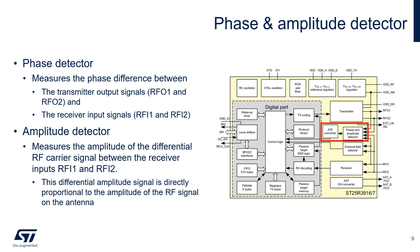The amplitude and phase detector provides information about the phase and amplitude of the incoming signal with respect to the transmitted output. An A-to-D converter allows these parameters to be captured and displayed in the phase and amplitude display registers.